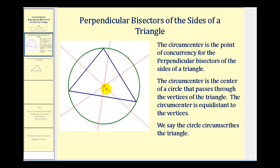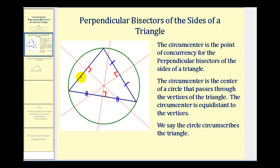In this diagram, the red lines are the perpendicular bisectors of the sides of the triangle. What that means is that these red lines and the sides of the triangle form a right angle here, here, and here, and that these cut each side of the triangle into two congruent segments. This segment is congruent to this segment, this segment is congruent to this segment, and this segment is congruent to this segment.